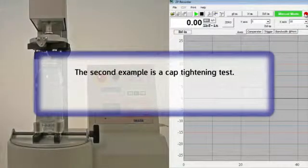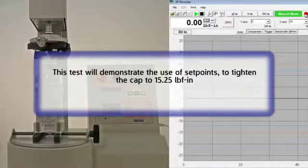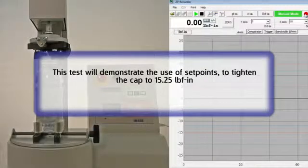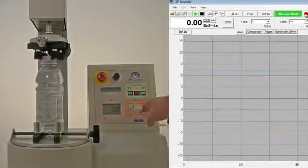The second example is a cap tightening test. This test will demonstrate the use of set points to tighten the cap of the bottle to 15.25 inch-pounds.